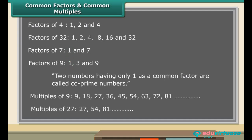Take a look at the multiples of 9 and 27. 27, 54, 81, etc. are multiples of both 9 and 27. Hence 27, 54, 81, etc. are the common multiples of 9 and 27.